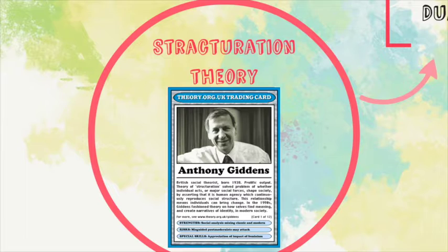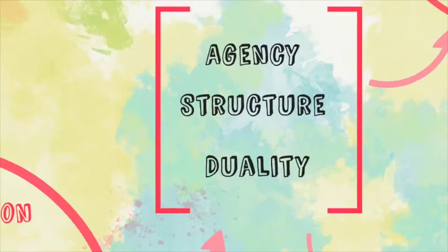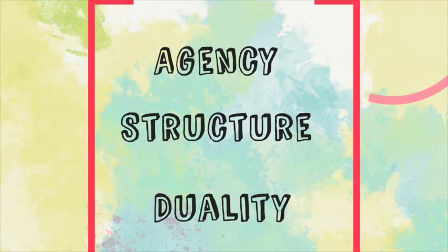Giddens' theory of structuration notes that social life is more than random individual acts but is not merely determined by social forces. For him, human agency and social structure are in a relationship with each other, and it is the repetition of the acts of individual agents which reproduces the structure.